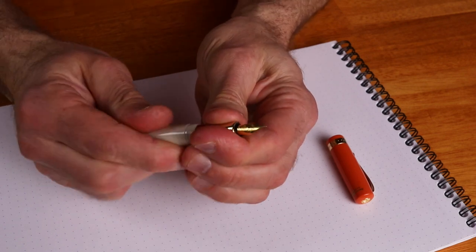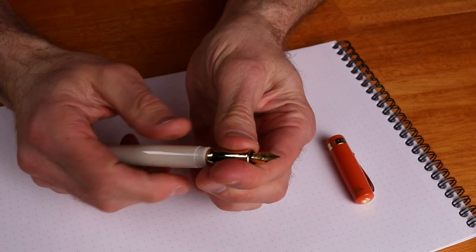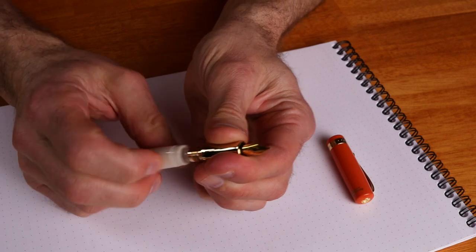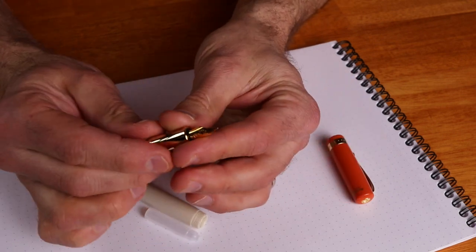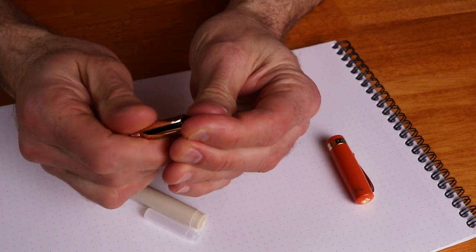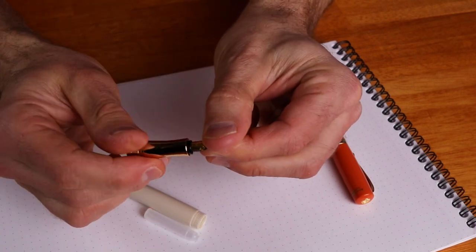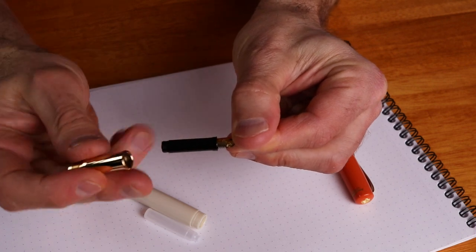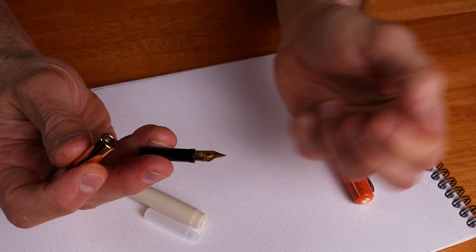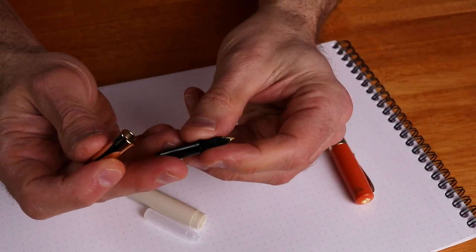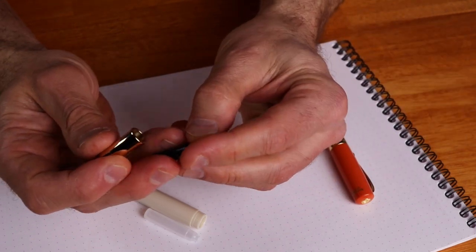Another thing you can do with premium Kaweco pens is unscrew this, take away the spacer cartridge, hold the nib, give it a screw, and sure enough, the nib pops out. You can replace it with another Kaweco nib because they have this marvelous screw-in collar mechanism.